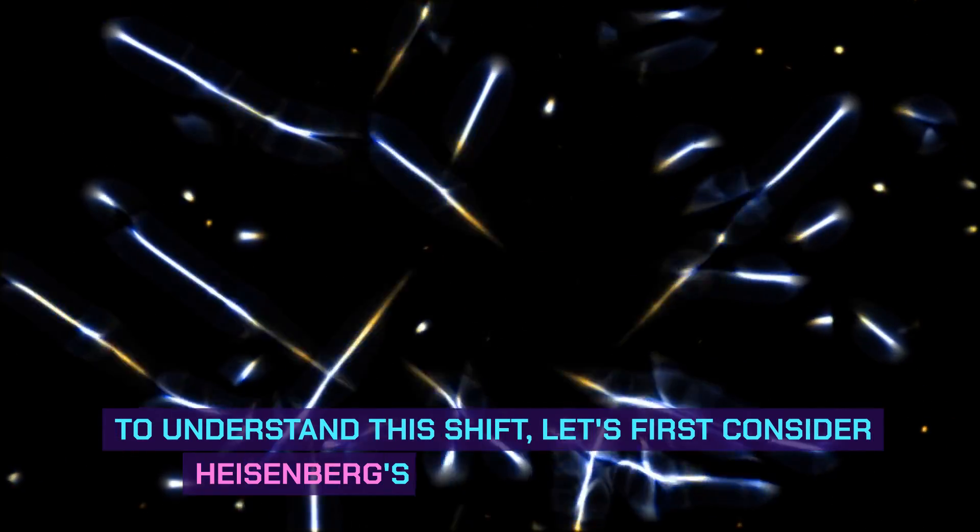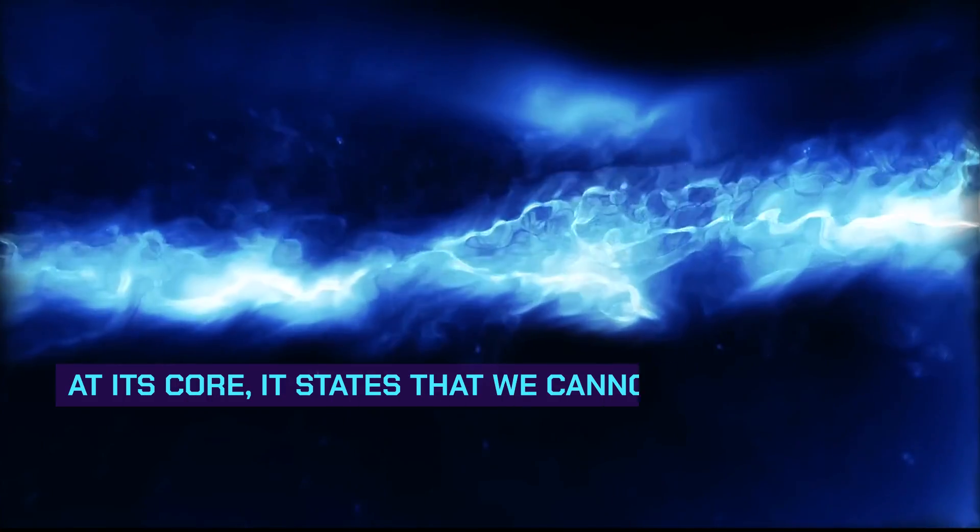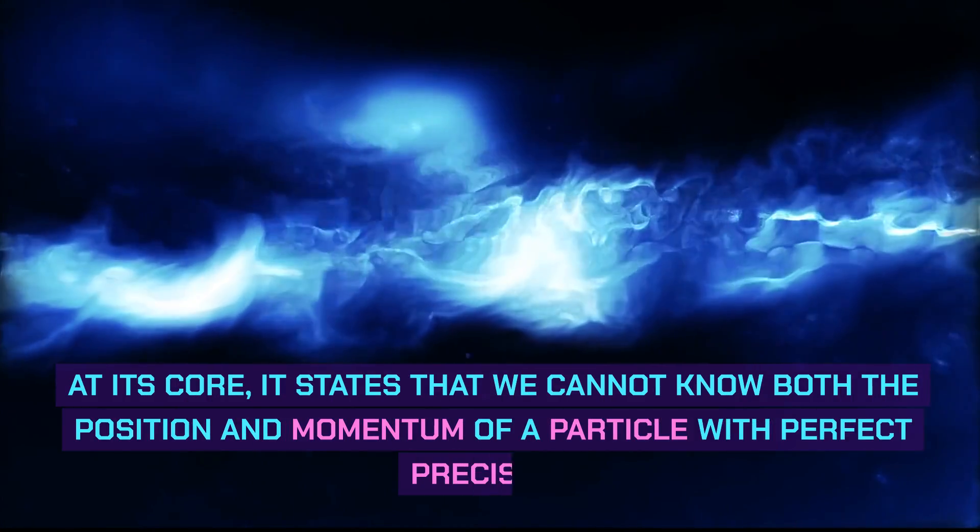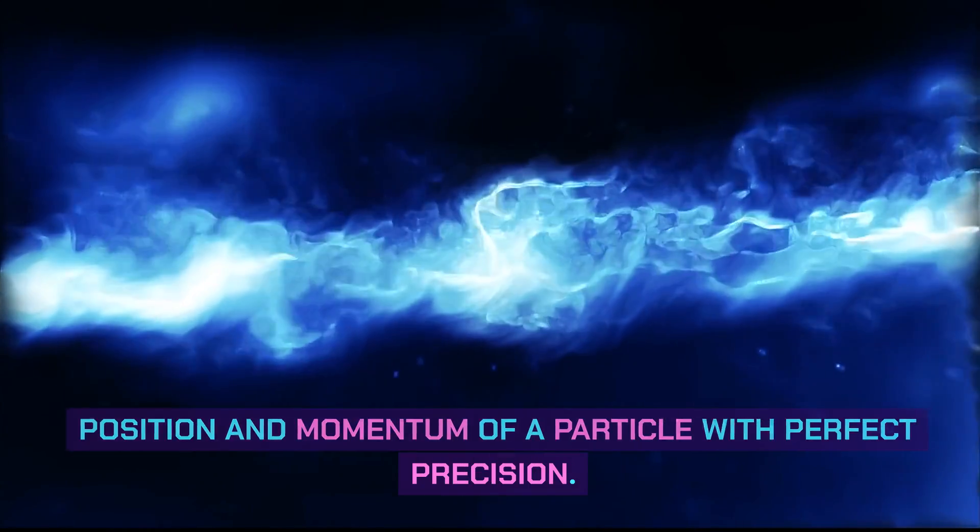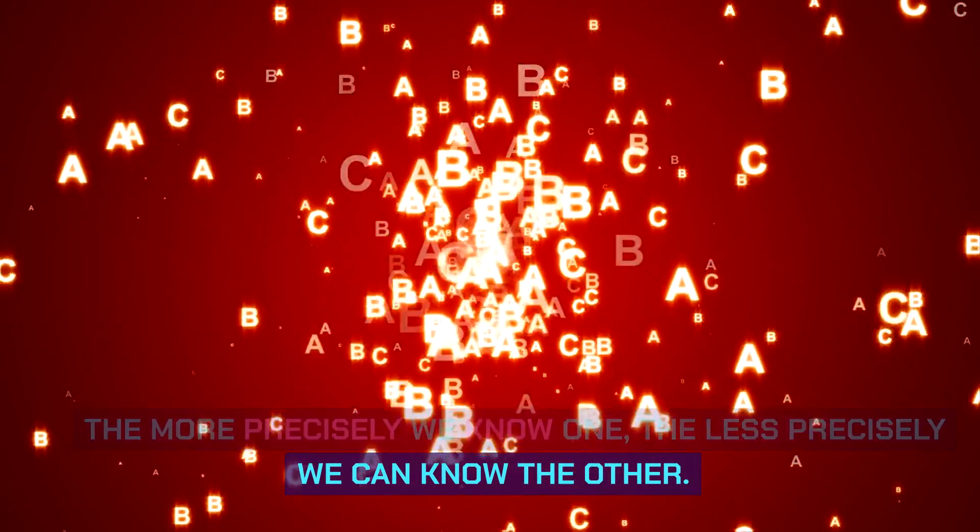To understand this shift, let's first consider Heisenberg's uncertainty principle. At its core, it states that we cannot know both the position and momentum of a particle with perfect precision. The more precisely we know one, the less precisely we can know the other.